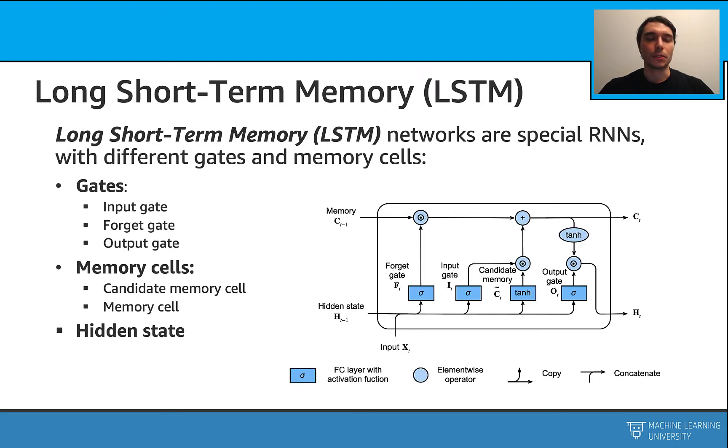A simple LSTM network looks like this. We have the gates, memory cell, and the hidden state. Let's focus on the memory cell. Here the memory cell acts like a memory line that goes through LSTM units, and we use gates to write to or remove from this line.